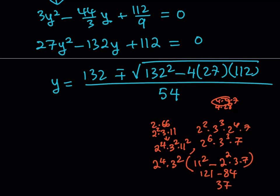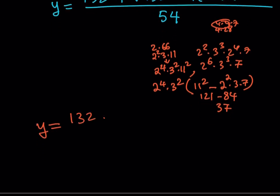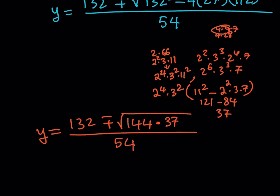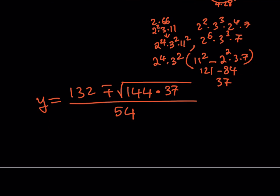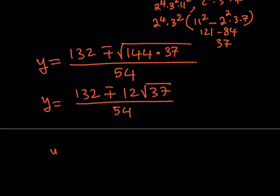So y equals 132 plus or minus the square root of 144 times 37, all over 54. Taking out 144 from the square root gives 12 root 37. Dividing numerator and denominator by 6 gives y equals 22 plus or minus 2 root 37, all over 9.